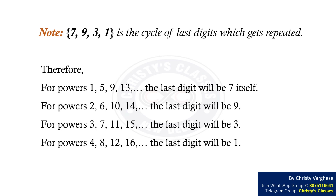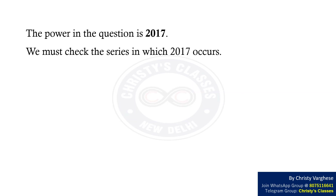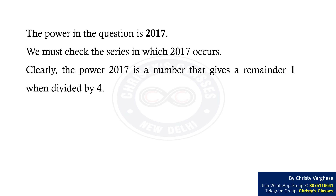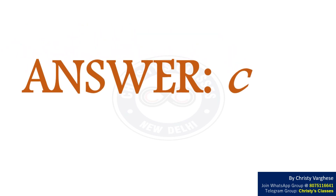The power in the question is 2017. We must check the series in which 2017 occurs. Clearly, the power 2017 gives a remainder of 1 when divided by 4. Thus, 2017 is in the series 1, 5, 9, 13, etc. This implies that the last digit of 2017 to the power 2017 is 7. Hence, the right answer is option C.